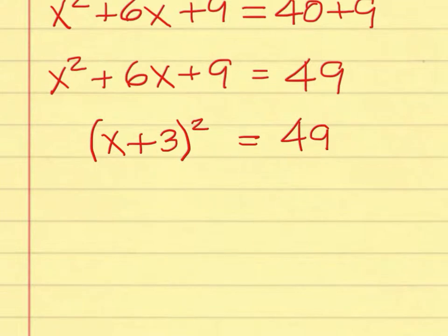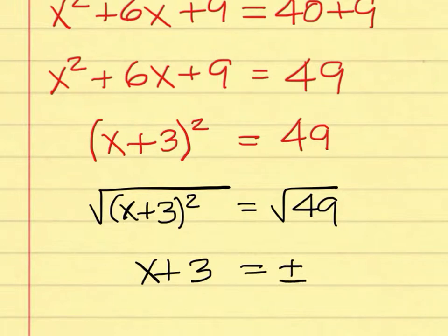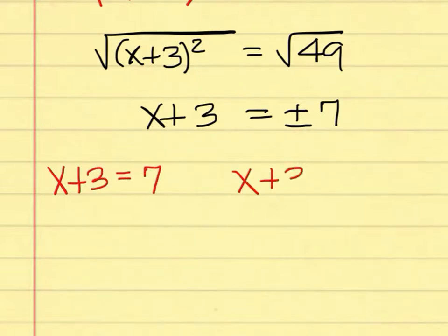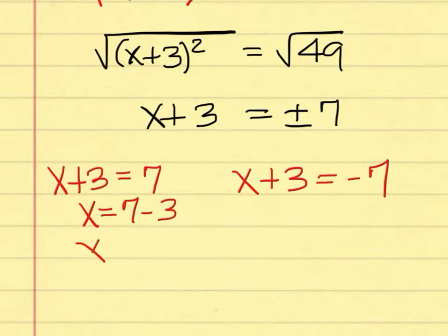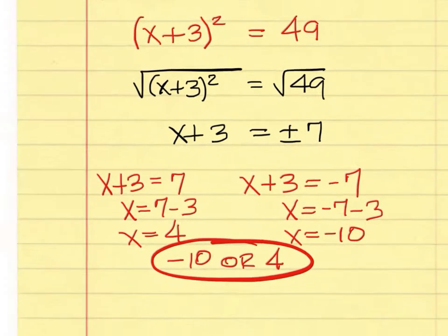To solve for x, we have to find the square root of both sides. The square root of the quantity squared of x plus 3 is simply x plus 3. The square root of 49 is plus or minus 7. So now you have two equations: x plus 3 equals 7, and x plus 3 equals negative 7. On the left, x equals 7 minus 3, which is 4. On the right, x equals negative 7 minus 3, which is negative 10. So negative 10 or 4 is the solution.